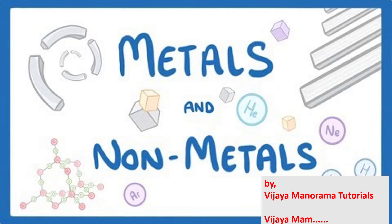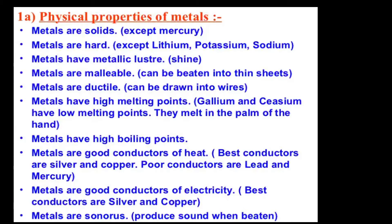From next class onwards we are going to do a marathon of all the multiple choice questions related to each and every chapter. So let us start the chapter. Here we are going to discuss about metals and non-metals. The metallurgy part is removed. We will cover all the physical properties and chemical properties of metals and non-metals and how ionic compounds are formed.